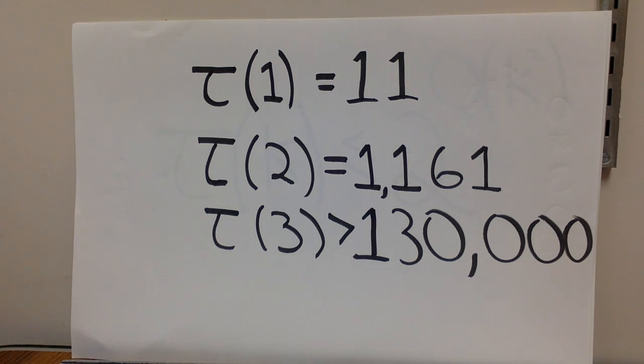We knew a couple of these. The tau of one was known to be 11 for a long time. And tau of two was only recently discovered to be 1,161. And also tau of three is found to be strictly larger than 130,000. We don't know if that's actually close to the right answer. And the important thing is these things are really, really hard to find.